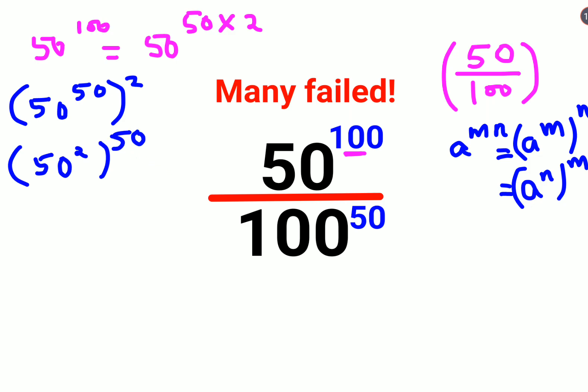Now what happens in that case is I am still dividing it with 100 raised to 50. Now see when the indices are same, A raised to M upon B raised to M, I can directly write this as A upon B the whole raised to M.